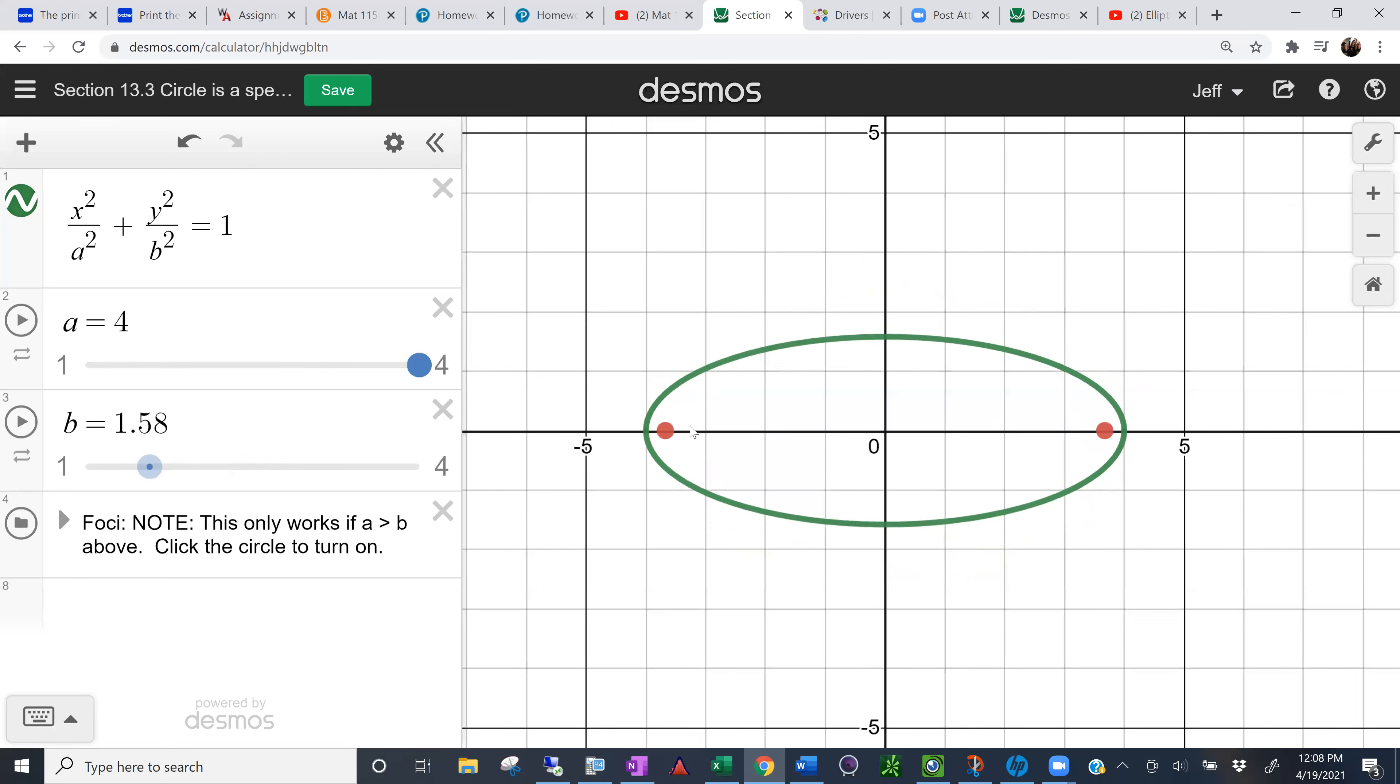Now there's a couple special points in here. And those foci have some neat properties. Now as you squeeze this out, make it narrower and narrower, those foci tend to be closer and closer to the edges of the ellipse.